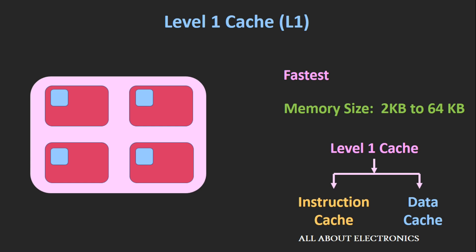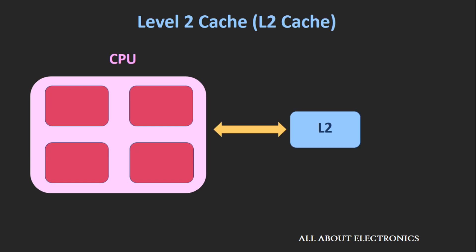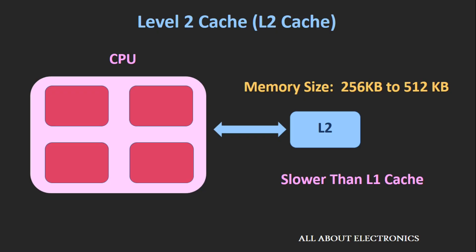The second level is known as Level 2 cache or L2 cache. This L2 cache could be either inside or outside the CPU, and it could be separate for each core or shared among all cores. If it is outside the CPU, it is connected via a very high-speed bus. The memory size of L2 cache is in the range of 256KB up to 512KB, but it is slower than the L1 cache.